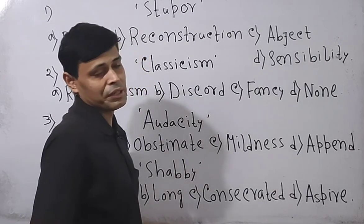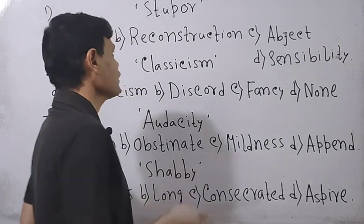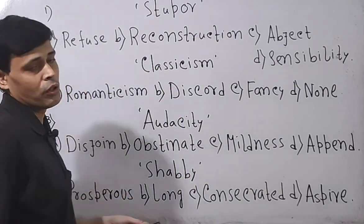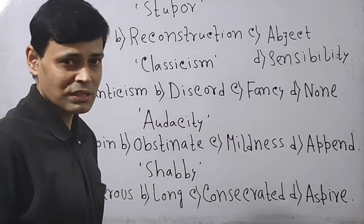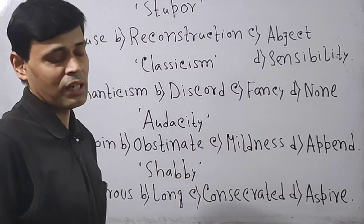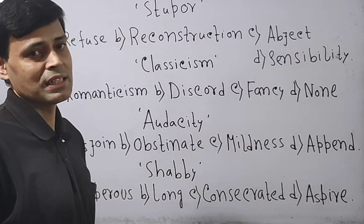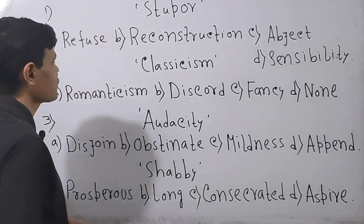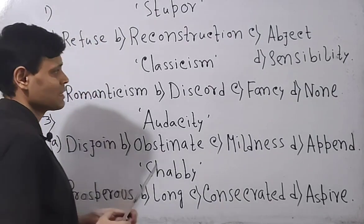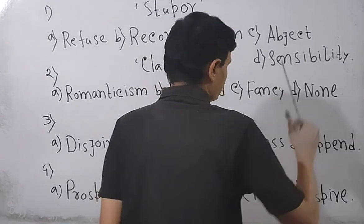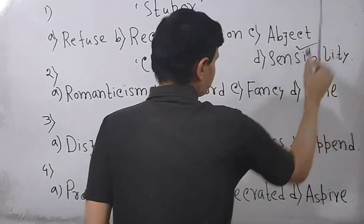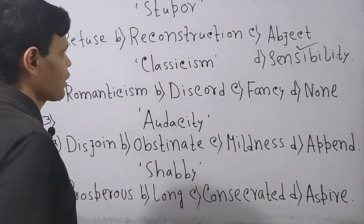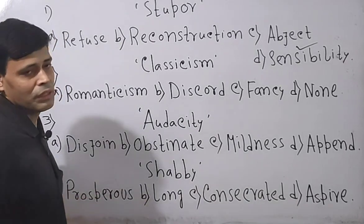Stupor means a state of unconsciousness or insensibility, therefore the opposite is 'sensibility.' Abject means humility, and reconstruction and refuse are both different, so the answer is sensibility.